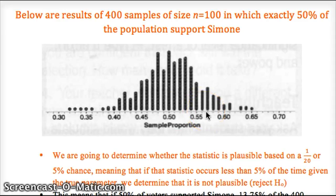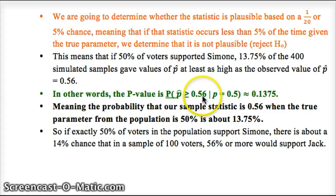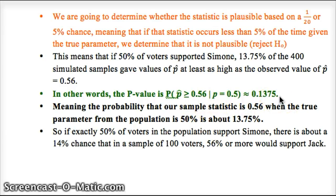We want to see if, by chance, a certain sample statistic could occur, or if that sample statistic shows that the hypothesized parameter of 50% — if 56% is far enough away from 50% to show that the true parameter is not 50%. In this simulation, 13.75% of the 400 samples have p-hat at 0.56 or bigger. So the probability of getting a sample proportion of 0.56 or larger is about 14%, given that the true parameter is 0.5. Just due to sampling variability, we could get a value that's 6% off about 14% of the time. This is one simulation, so we're going to look at what this number should be using a significance test.